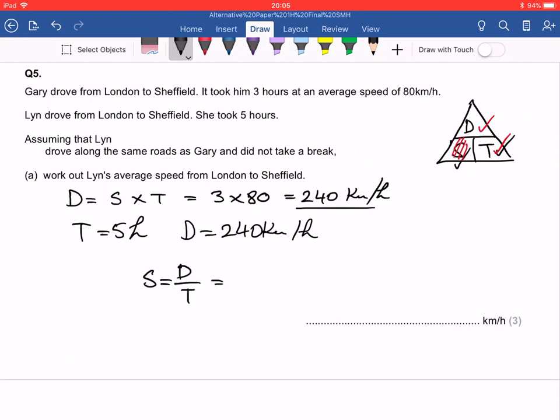So the distance is 240, the time is five hours. So let's divide. Let's do it. How many fives into 24? And that's four with the remainder of four. How many fives in 48? Eight, if I'm not mistaken.